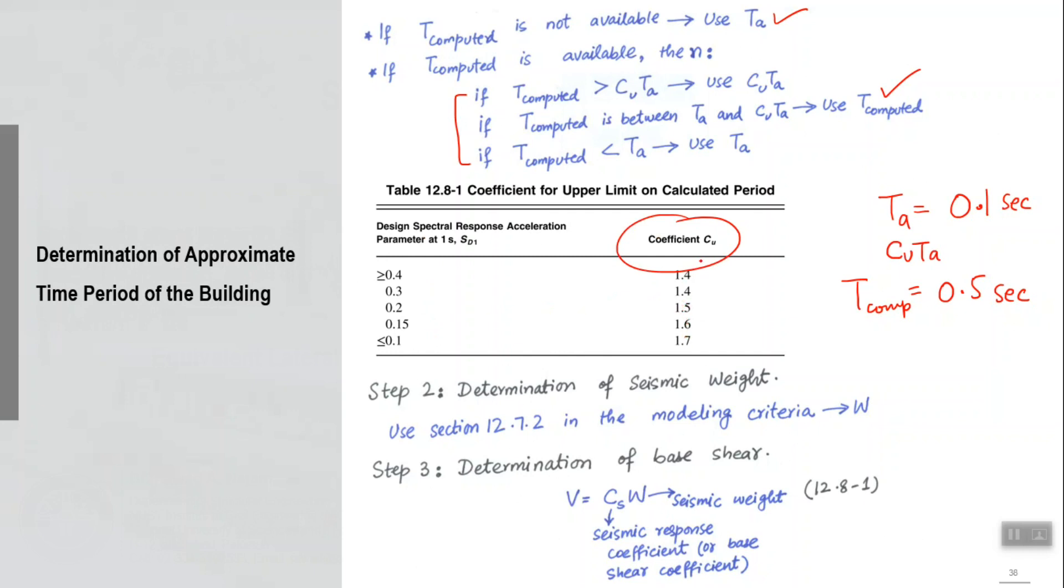Let's say my Cu is 1.5. Then I will calculate Cu Ta and it will be 0.1 times 1.5, which will be 0.15. Now I have an upper limit 0.15 and the actual time period is 0.5 second, so I will be using 0.15, the upper limit, because this first scenario will be applicable in this case.